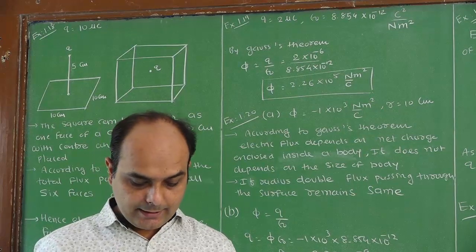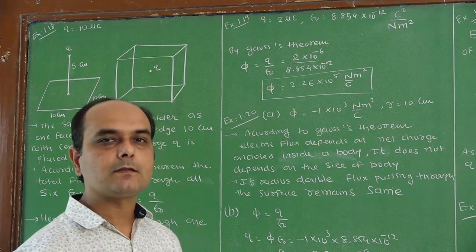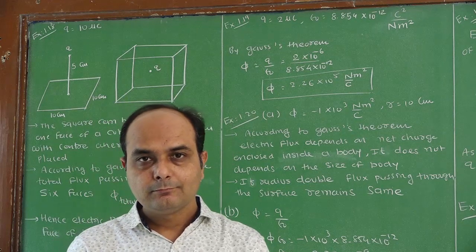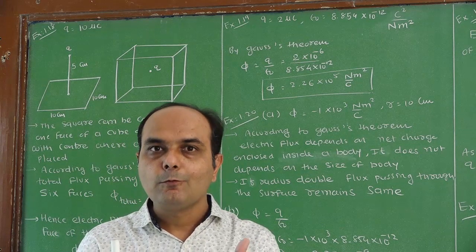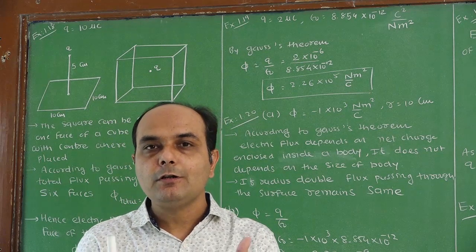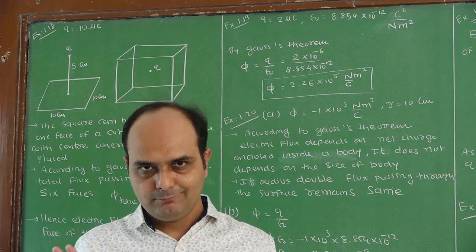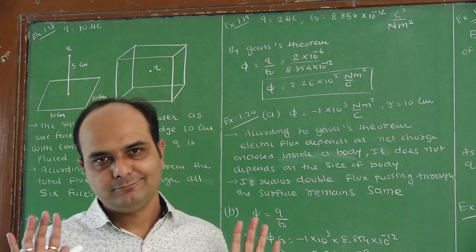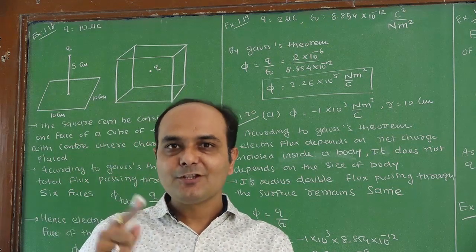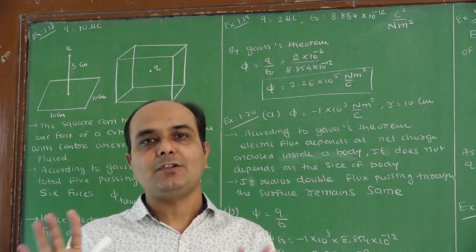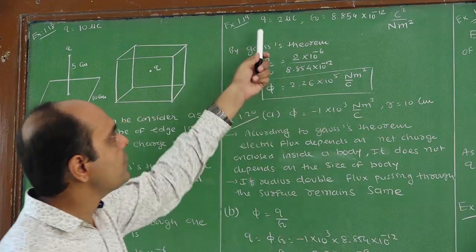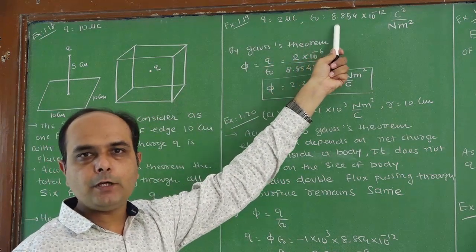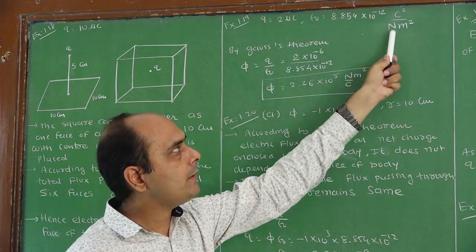What is the net electric flux through the surface? These examples are related to the cube, but the question is different — what is the total or net electric flux of the cube? The net electric flux of the cube is q by epsilon 0, but due to one face it is q by 6 epsilon 0. The charge q is equal to 2 microcoulomb.